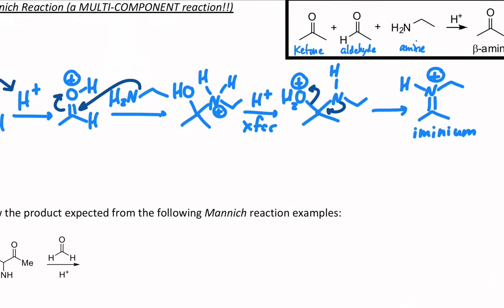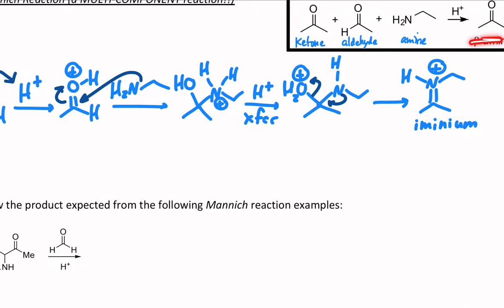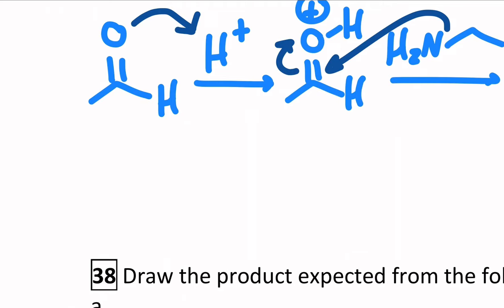Because what happens is we do this in the presence of the ketone, and that's how we get to this functional group in the end. What's happening is, on the other side of your flask, meanwhile, it's like a comic book. Meanwhile, on the other side of town, you have a ketone that's going to undergo a reverse tautomerization.